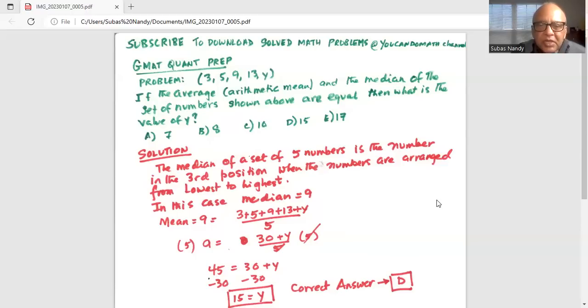Now we will multiply both sides by 5. So 5 times 9 is 30 plus Y divided by 5, multiplied by 5. So 5 in the numerator and 5 in the denominator on the right hand side of the equal sign cancel out. So we have 5 times 9 equal to 45 is equal to 30 plus Y.